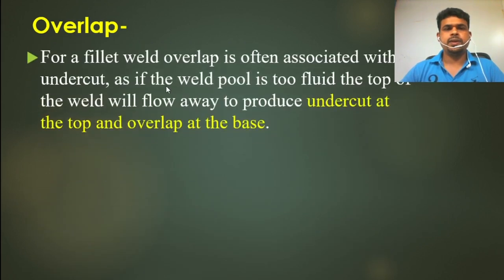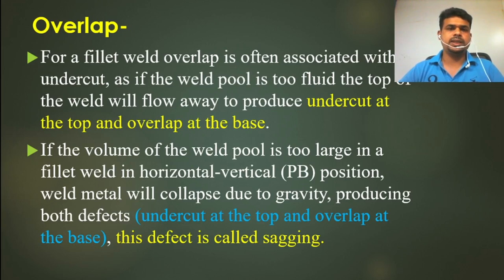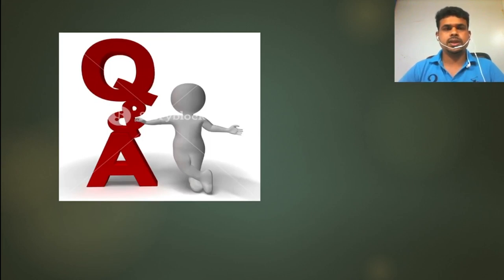Note: for a fillet weld, overlap is often associated with undercut. If the weld pool is too large, metal flows to produce undercut at the top and overlap at the base. If the volume of the weld pool is too large in a fillet weld in horizontal-vertical position, the weld metal will collapse due to gravity, producing both undercut at the top and overlap at the base. This condition is called sagging.